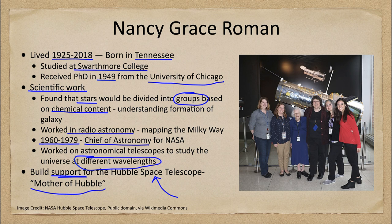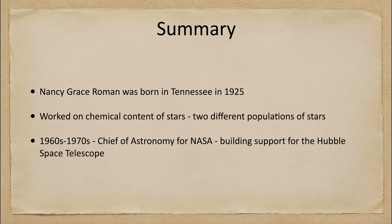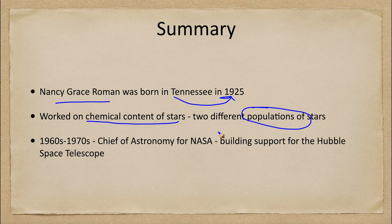To summarize what we covered today: Nancy Grace Roman was born in Tennessee in 1925. We talked about her work on the chemical content of stars, finding two different populations of stars and relating that to the formation of our galaxy. In the 1960s and 70s she was the chief of astronomy for NASA, and she built support for the Hubble Space Telescope, which would later be launched in 1990.